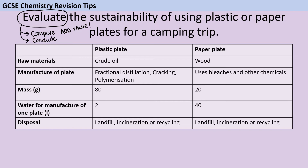There is one mark scheme for all of the AQA GCSE Science Evaluate questions and it talks about a strongly justified conclusion. If you don't say that one particular side of the argument is better, then the most marks you can get is four out of six. So now that you know that, pause the video and give yourself six minutes to answer this six-mark question.